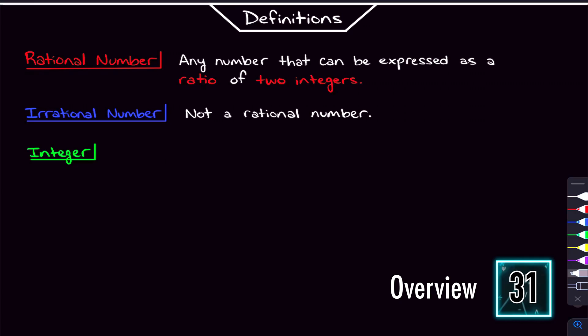By the end of this video, you're easily going to be able to tell which numbers are rational and which numbers are irrational. And in about 30 seconds, here's how this video is going to get you there.